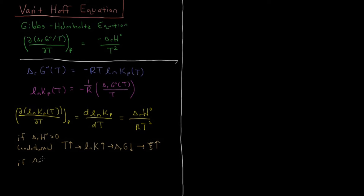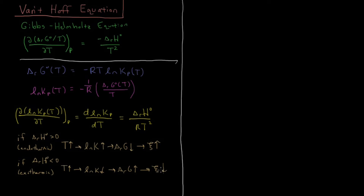Analogously, if the standard enthalpy of reaction is less than zero — an exothermic reaction — then if temperature goes up, ln Kp goes down, the Gibbs energy of reaction goes up, the extent of reaction decreases, and the reaction pushes in reverse. The reaction releases heat going forward, so it goes backward to absorb some heat and counteract the temperature increase.